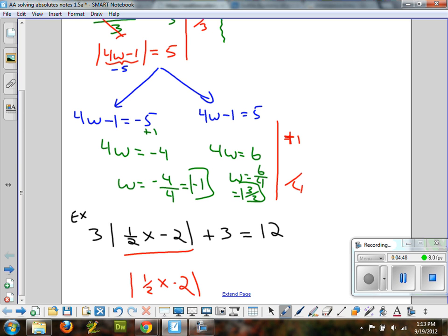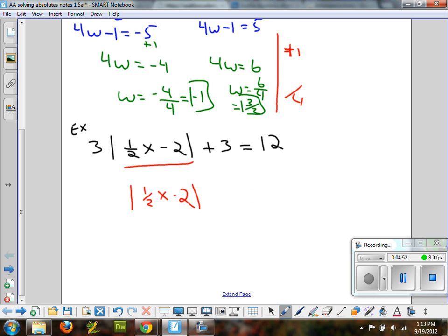So, if I do this and I subtract 3, subtract 3, then you're going to get 9. And then, next step. Divide by 3. Getting it all by itself. Getting the absolute value all by itself. Now, what do we do?